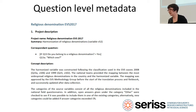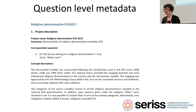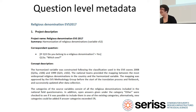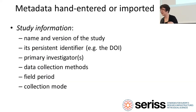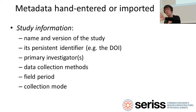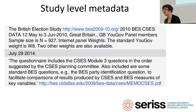Here's an example of the question-level metadata from the religious denomination variable in the European Values Survey from 2017. You can see they have the project name — religious denomination from EVS 2017 — an assembly description of what it's measuring, the question wording, and a concept description where they lay out their rationale for their religious denomination metric. All of this is actually generated automatically — once you write it into a project, it's automatically generated every time you produce a report.